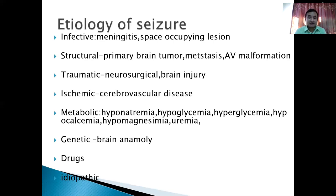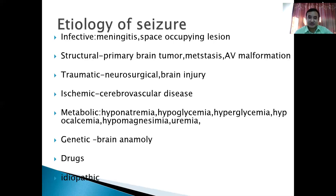In the elderly population, the first episode of stroke can be presented with Caesar activity. Similarly, metabolic conditions like hyponatremia, hypoglycemia, and hyperglycemia can precipitate Caesar. Genetic conditions and brain anomalies like cerebral palsy, especially in children, can present with Caesar. Different drugs like fluoroquinolones are notorious to cause Caesar, and sometimes we cannot identify the exact etiology — that is what we call idiopathic.